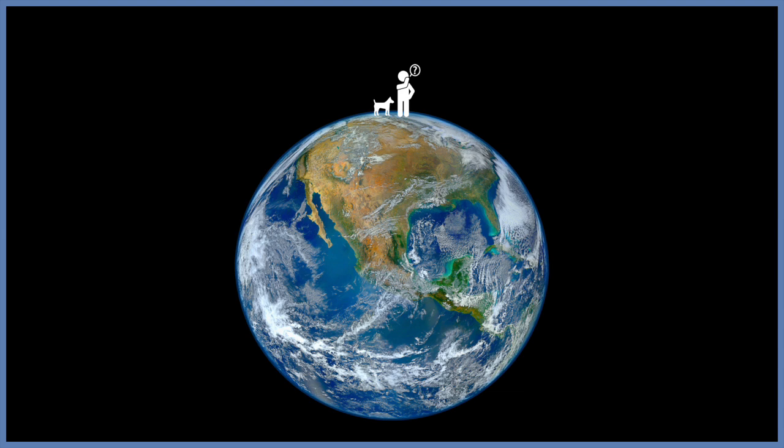Having only lived on one planet, humans are pretty much used to the Earth's environment. Gravity is measured in g's, so it's quite easy to categorise Earth as just a steady 1g, or you can call it 9.8 metres per second squared.